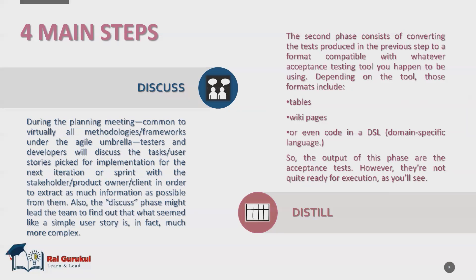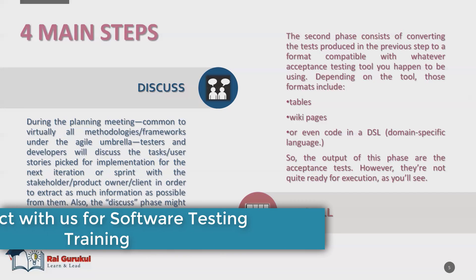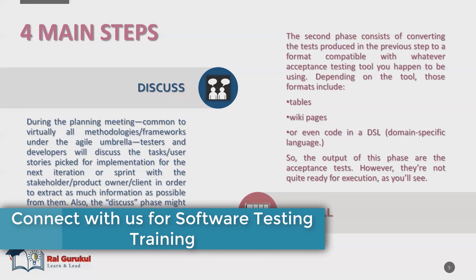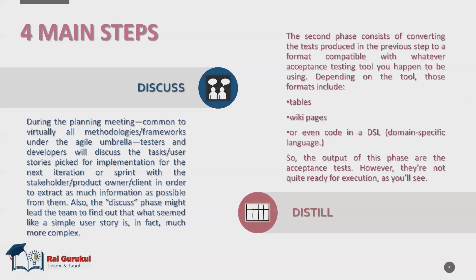Second is the distill phase. This consists of converting the tests produced in the previous step to a format compatible with whatever acceptance testing tool is being used. Depending on the tool, those formats include tables, wiki pages, or even code in a DSL — that is, Domain Specific Language.